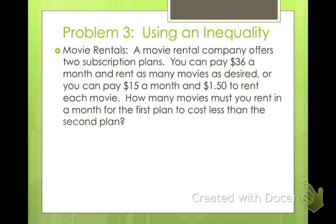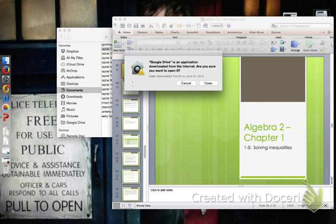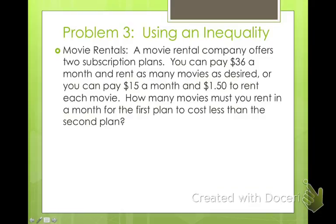Alright, here's an example of how we can use these in real life. So a movie rental company offers two subscription plans. You can pay $36 a month and rent as many movies as you want, or you can pay $15 a month and then just pay $1.50 each time you watch a movie. So how many movies must you rent in a month for the first plan to cost less than the second plan?